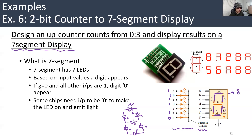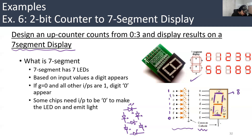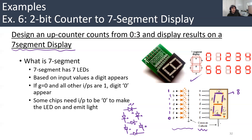You can play with different configurations for A, B, C, D to know which digit will appear — whether A is one or zero, etc. The question here is to design a circuit that counts from zero to three, counting up, and the result should appear on a seven segment display.